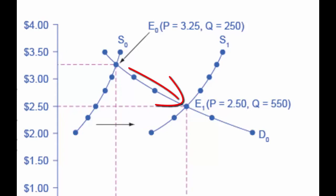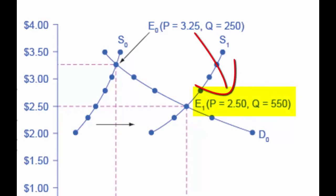After we determine this, we need to identify the new equilibrium, E1. In this case, the new equilibrium price is $2.50, which is a decrease from the original equilibrium price.